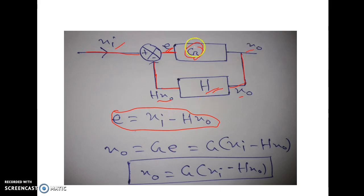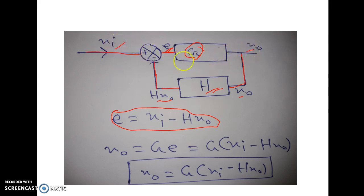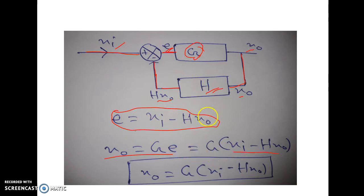Then E equals XI minus H·X0, because we are subtracting the feedback signal from the input signal. This is the gain block. Previously, when the feedback scheme was not there, X_out was G times X_input. But now X_out is G times E. E means XI minus H·X_out. So that is what I have written: X_out equals G times E, which equals G times (XI minus H·X0).